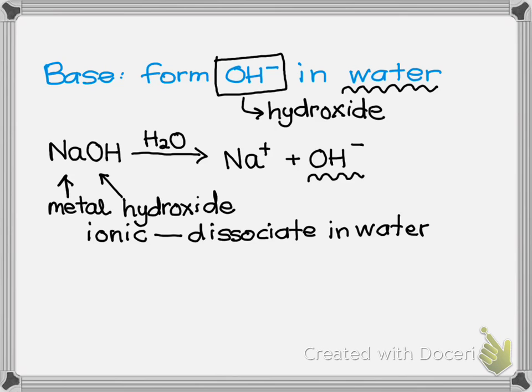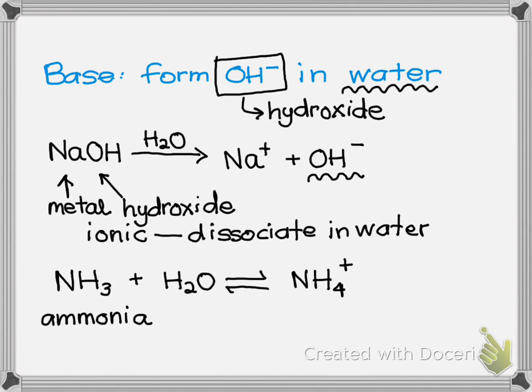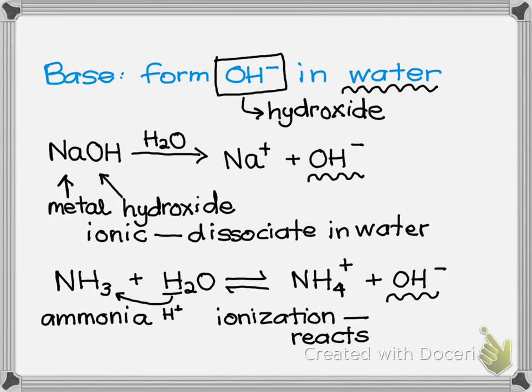The second type - sometimes these bases don't form it directly by dissociation, it's by something called ionization which is a reaction. There's only one in this particular class that I want you to be familiar with because it's a common chemical: ammonia. Ammonia is NH3, and when I put it in water it reacts. This is a reversible reaction. One of the hydrogens from the water comes off as H+ and makes NH4+ and an OH-. One of these hydrogens, H+, a proton, comes off and goes there. This one reacts - it's called ionization - and it reacts to form hydroxide ion.